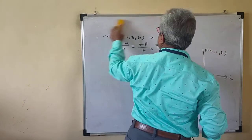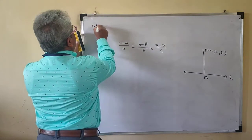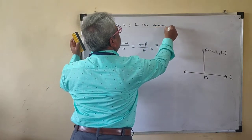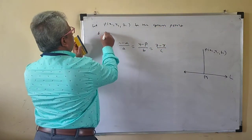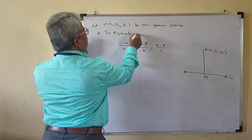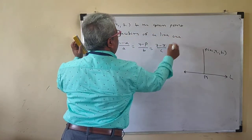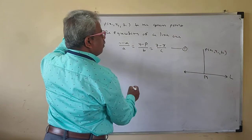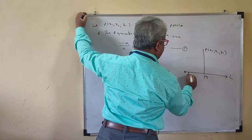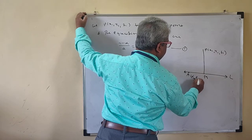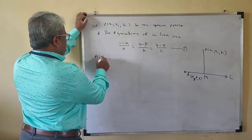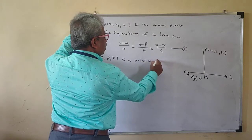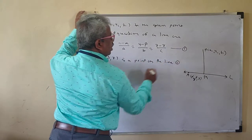Solution. Let P(x1, y1, z1) be the given point. The equations of the line are given — call it Line 1. So A(α, β, γ) is a point on Line 1.